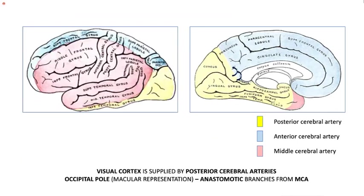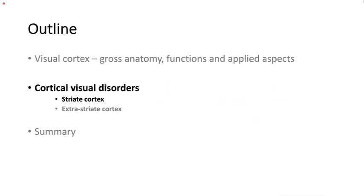The occipital lobe — our area of interest — is supplied by branches of the posterior cerebral artery. However, the occipital pole, where the macula is represented, also has anastomotic branches from the MCA, giving it a dual blood supply. Moving on to cortical visual disorders related to the striate cortex.